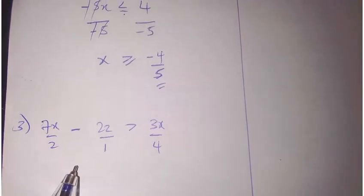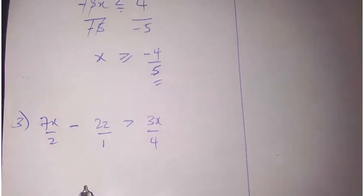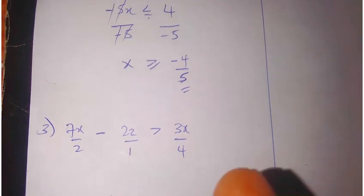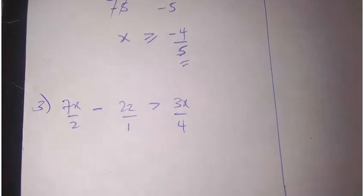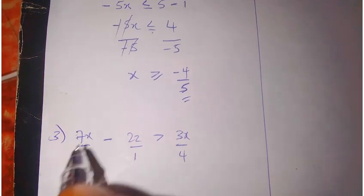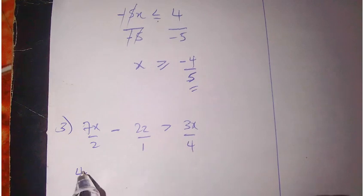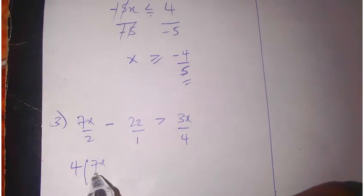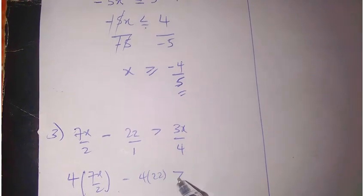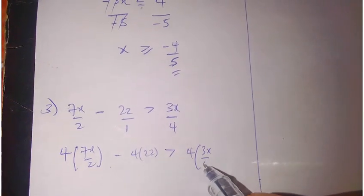Multiplying all through by the general LCM, which is 4, leads us to 4 into 7x over 2 minus 4 into 22 to be greater than 4 into 3x over 4.